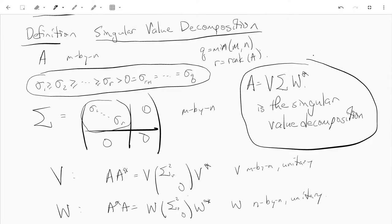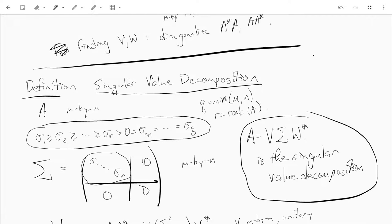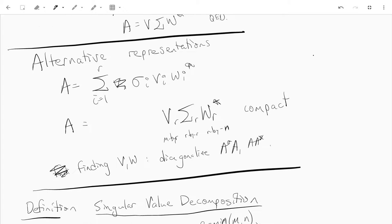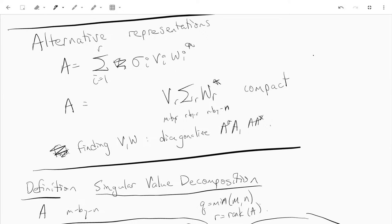There's at least two different ways of describing the singular value decomposition. First off, is if you expand, if you use block multiplication, you can prove that you can write A as the sum of R matrices, and each matrix is the singular value, the non-zero singular value of sigma I times V I times W I star, where V I and W I are the columns of V and W respectively.